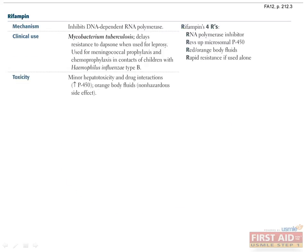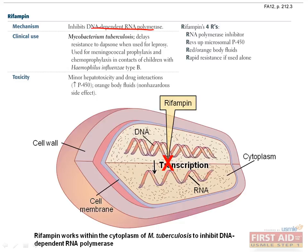Rifampin works within the cytoplasm of M. tuberculosis to inhibit DNA-dependent RNA polymerase. It is clinically used against M. tuberculosis and as an alternative to dapsone against M. leprae. Its classic side effect is red-orange discoloration of body fluids.